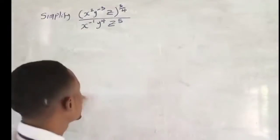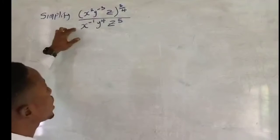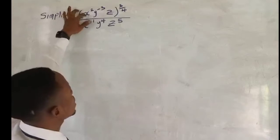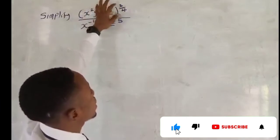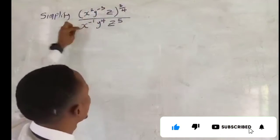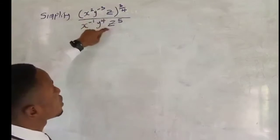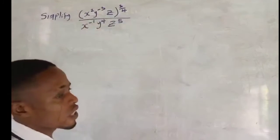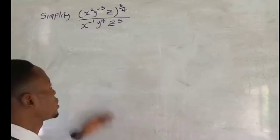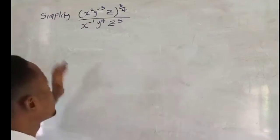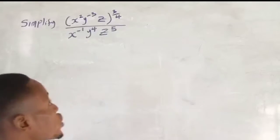Today let's look at how you can solve this question. This is a very simple question. Now the first thing to come to your mind after reading the question is that we need to simplify: we have a bracket with s raised to power 2, y raised to power minus 3, z — all raised to power 3 over 4 — divided by s raised to power 2 over 4, s raised to power minus 1, y raised to power 4, z raised to power 5. This is about indices, so we apply the laws of indices.